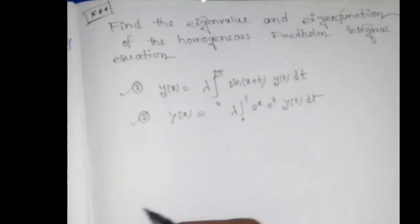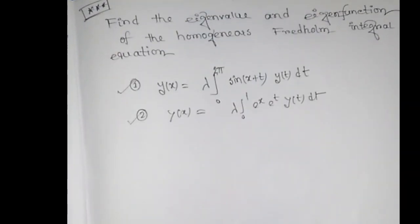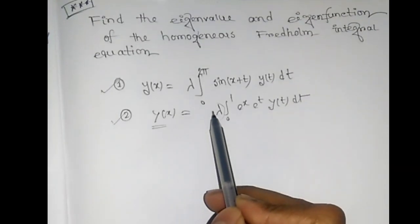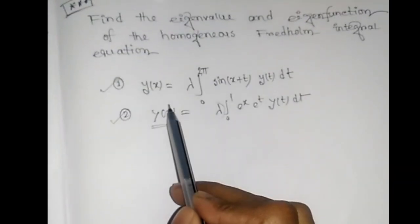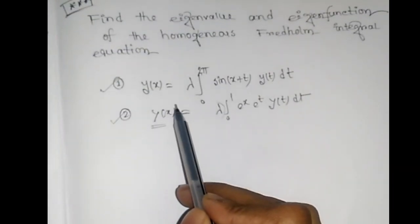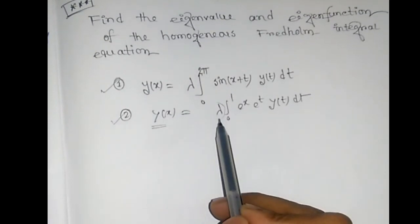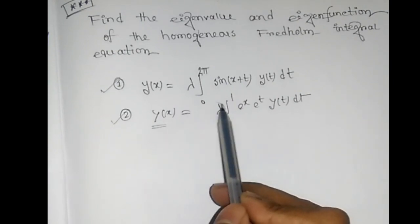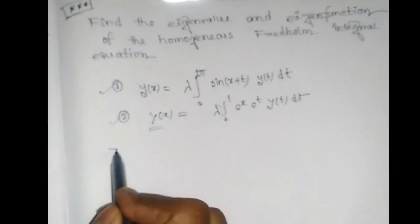We know that eigenvalues are the values of the parameter λ for which y(x) has non-zero solutions. These values of λ are called eigenvalues, and the corresponding functions are called eigenfunctions.